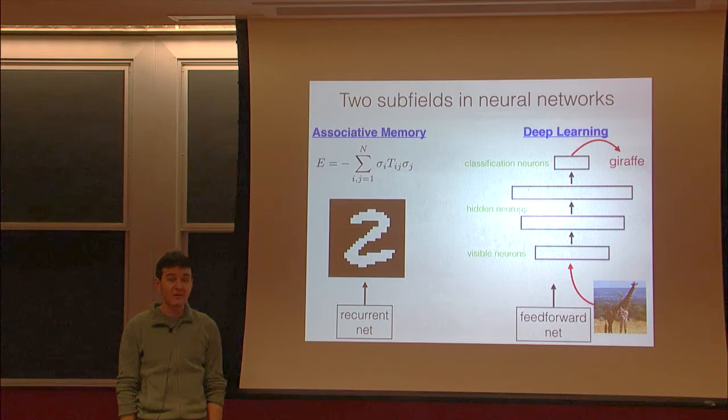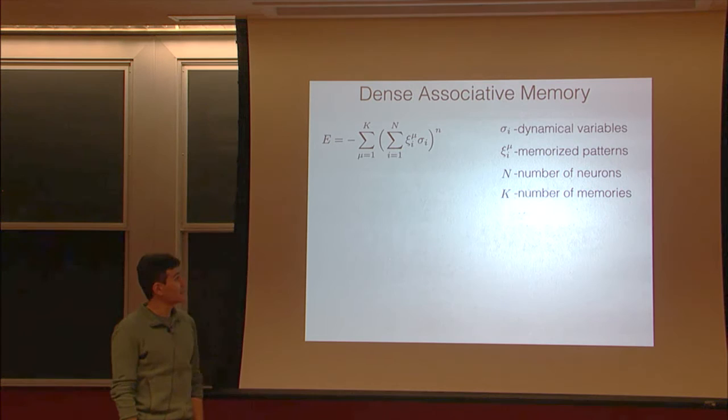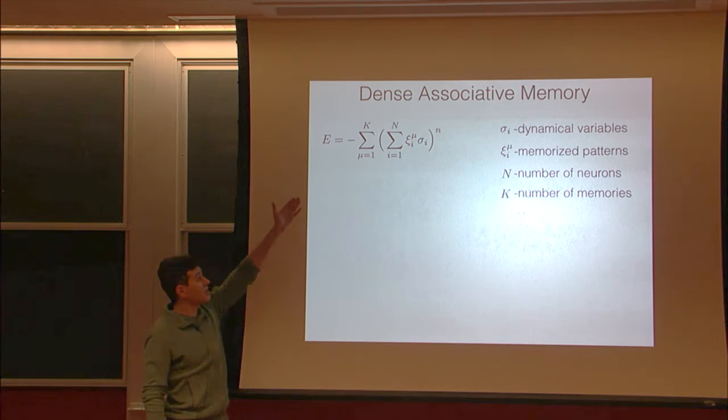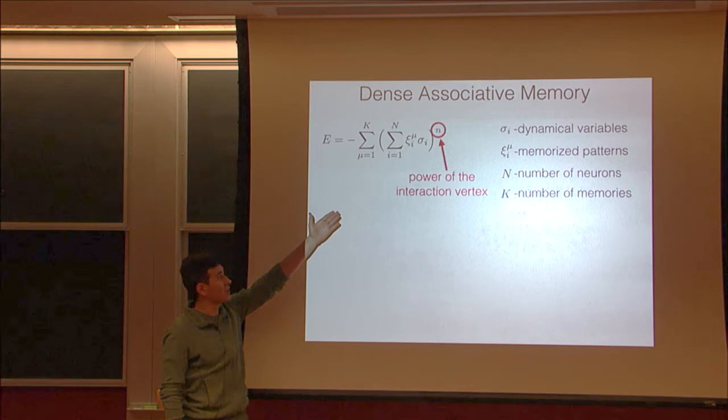In spite of these differences, when it comes to pattern classification, there is a very simple duality that relates these two different views. More specifically, we discuss dense associative memories with higher-order interactions in the energy function. The energy is given by this formula, and the aim is to look into the computational properties of these models as a function of power n.